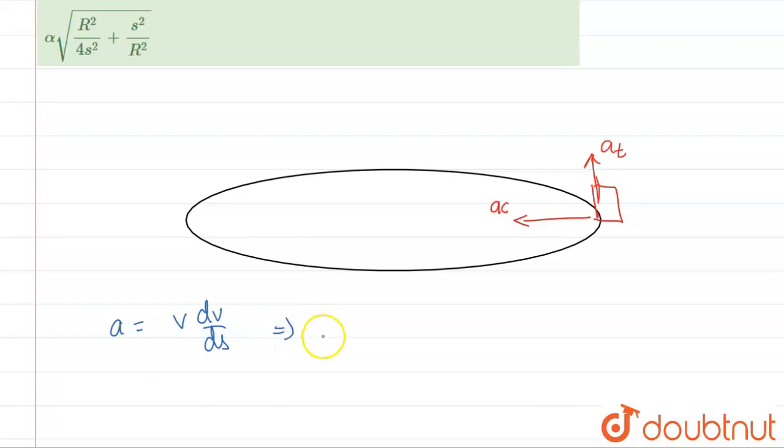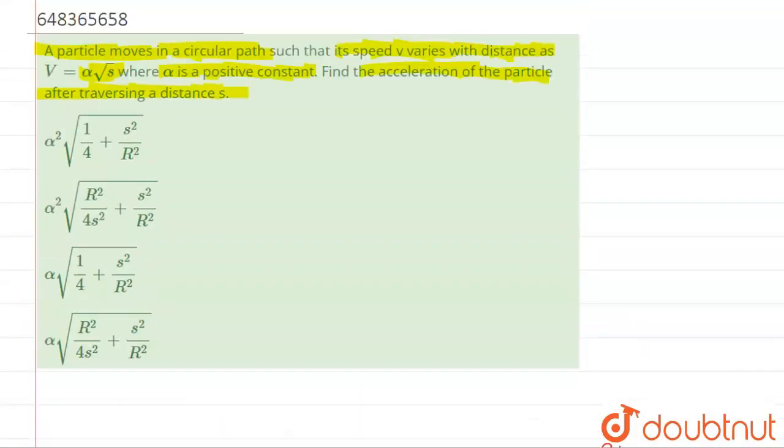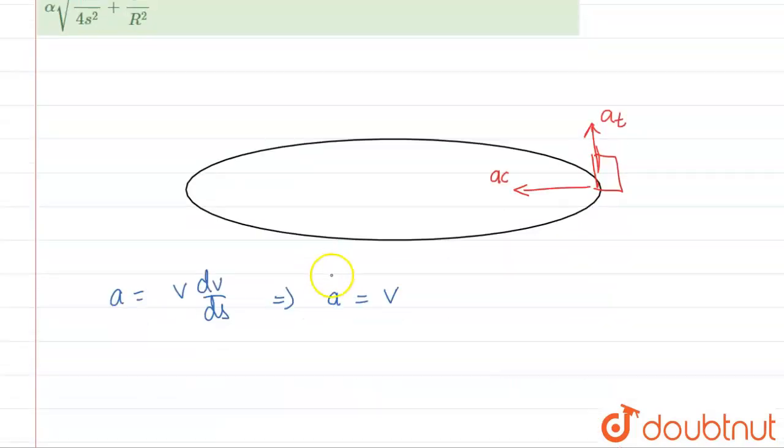This will equal v times dv upon ds. What is dv? It's alpha root s. Alpha will come out and we get d root s upon ds.